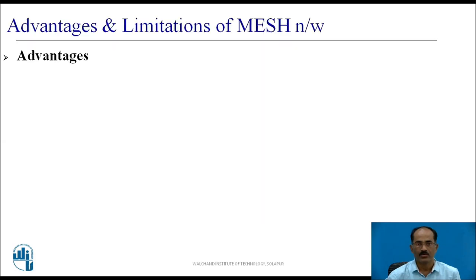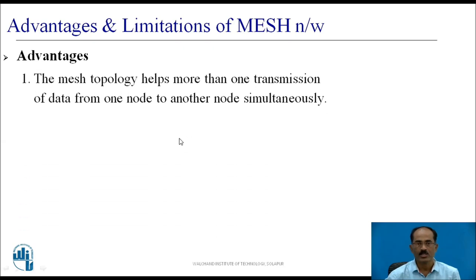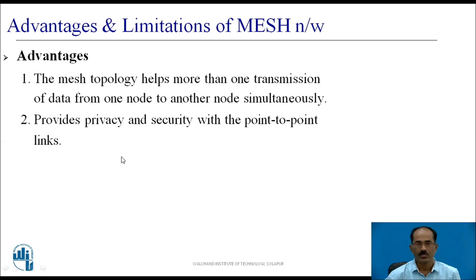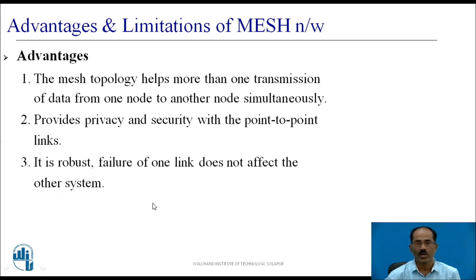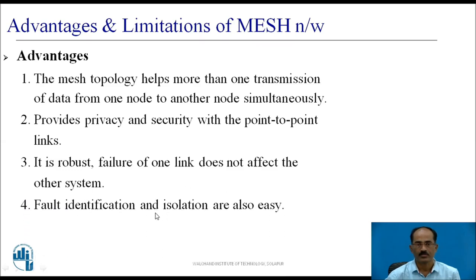Advantages of the mesh network: First, mesh topology helps transmit data from more than one node to another node simultaneously. Second, it provides privacy and security with point-to-point links, since there is no central hub and transmission is direct from one point to another. Third, it is robust — failure of one link does not affect the other parts of the system. Fourth, fault identification and isolation are also easy.